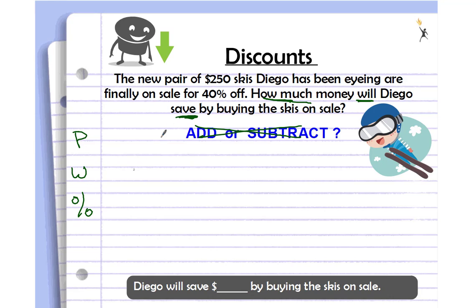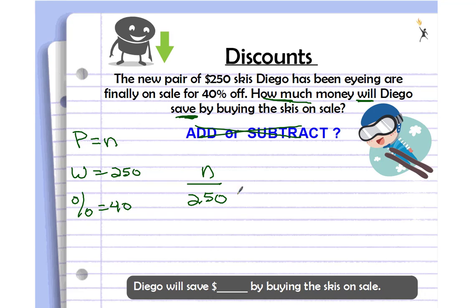Let's do our part, whole, and percent amounts. The whole is $250 — the total cost of the skis. The discount is 40 percent off, so our percent is 40. We can't combine dollars and percent, so we need to find out what 40 percent equals in dollars — that's the part. Set up your proportion: part over 250 equals 40 over 100. Pause the video, solve it, then come back and check your answer.